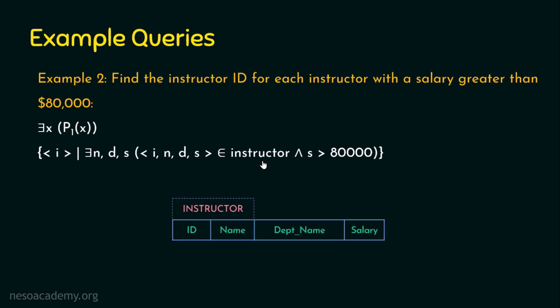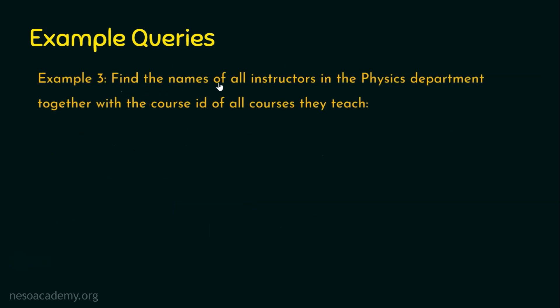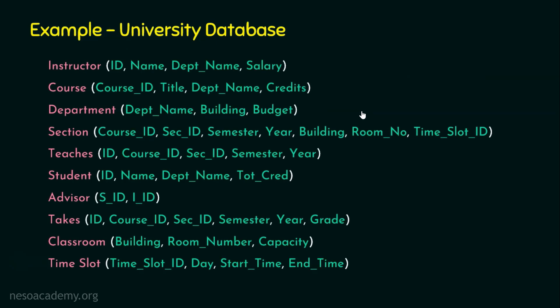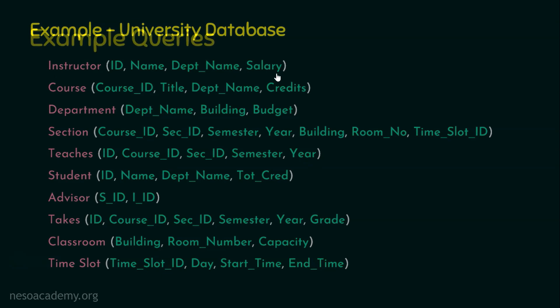Let's move on to example number three. The question is: find the names of all instructors in the physics department together with the course id of all courses they teach. Pause and think about how many relations are required, since the output may not be available in a single relation. After checking the university database schema, it is clear that we need to retrieve from the instructor relation and from the teaches relation.